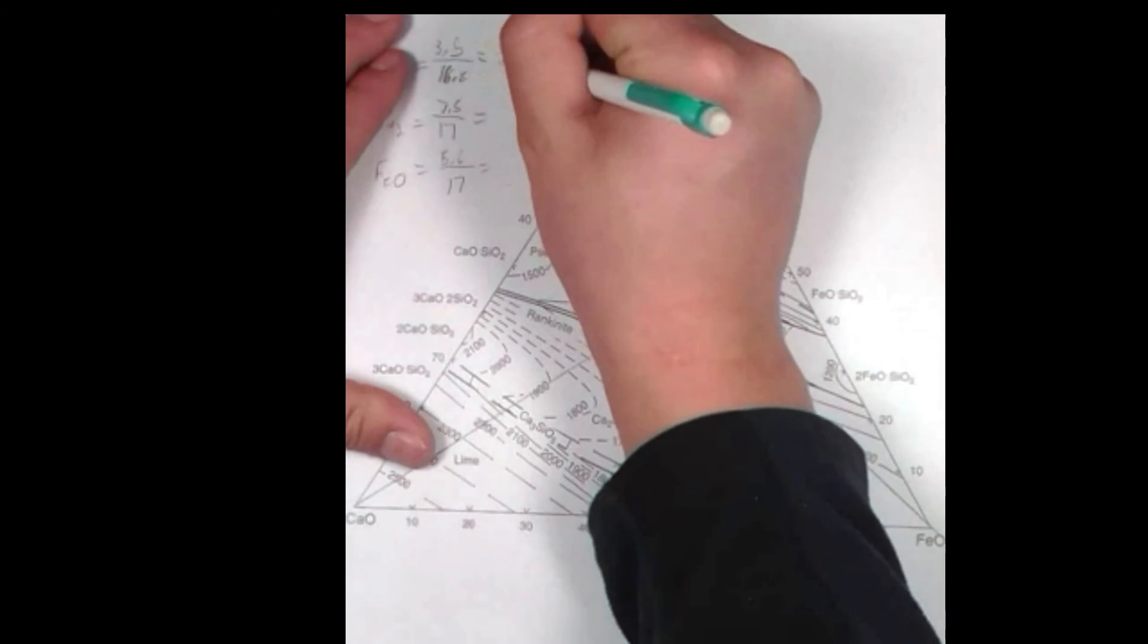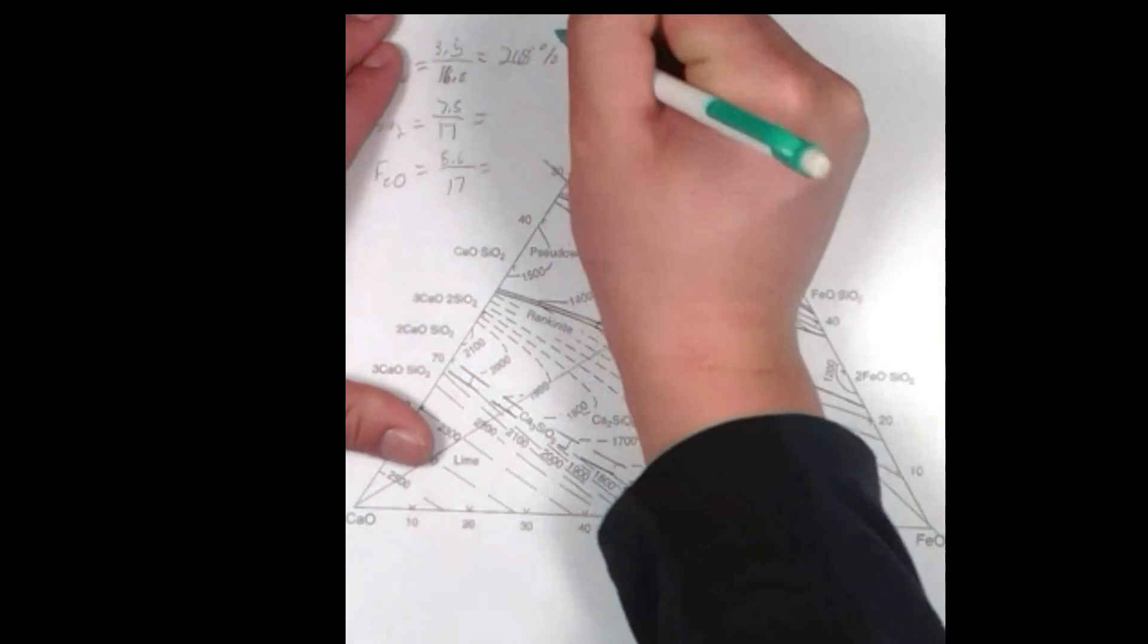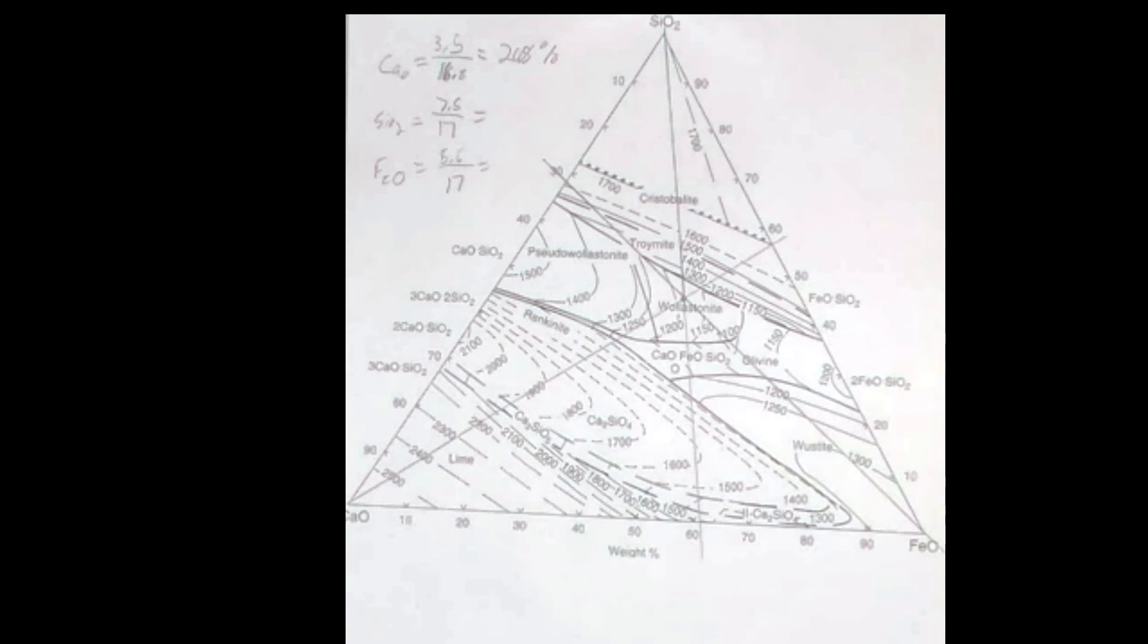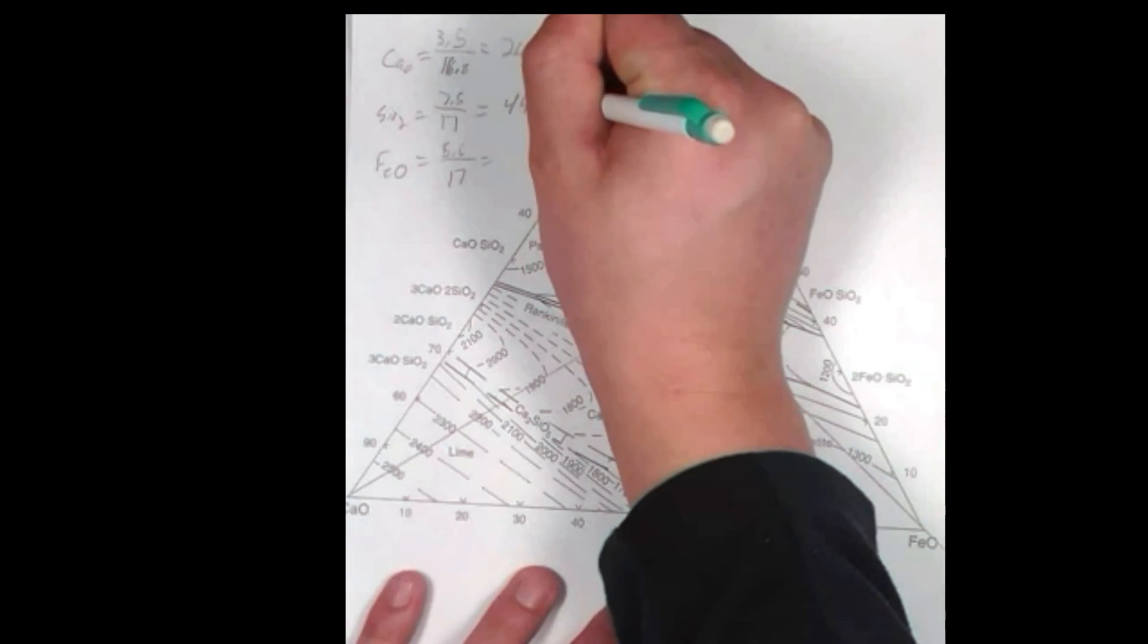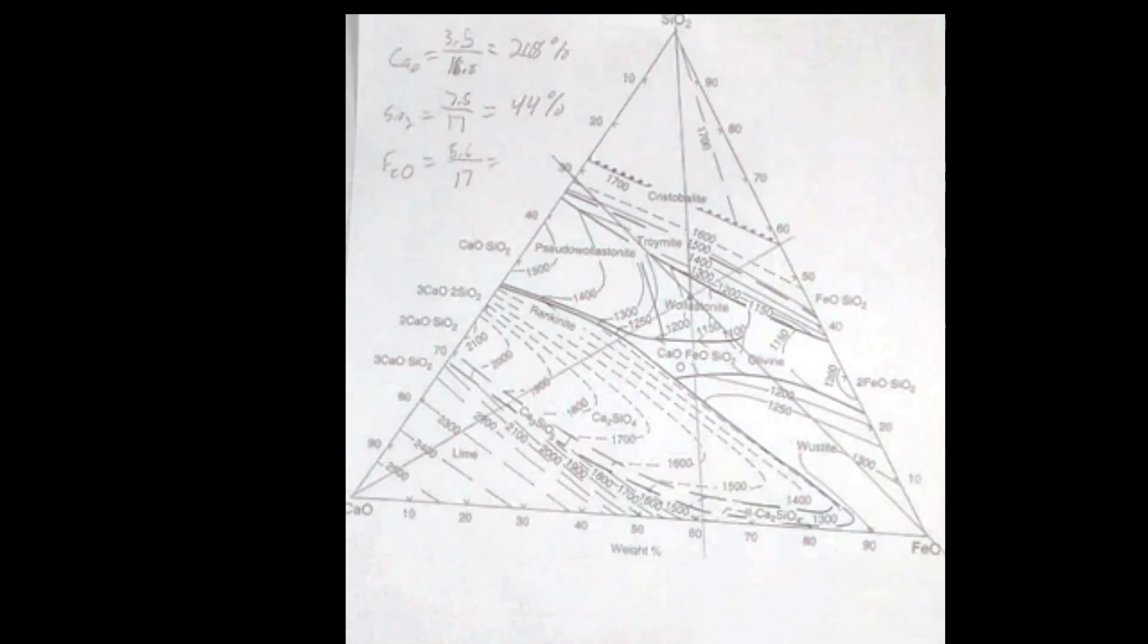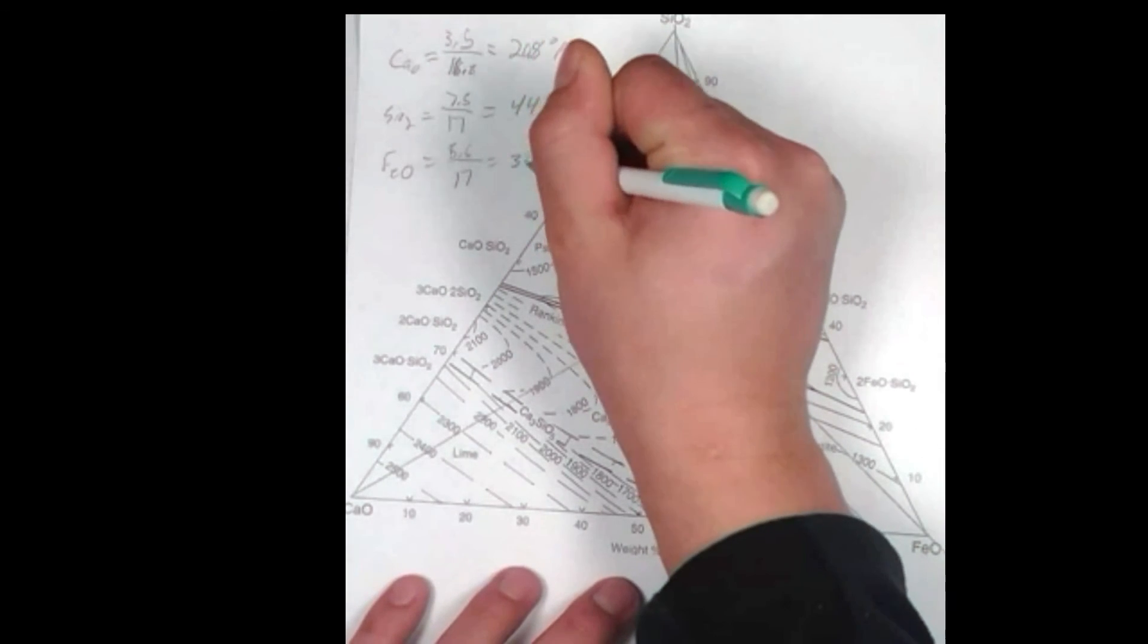We have 20.8% CAO, 44% SiO2, and 33% FeO.